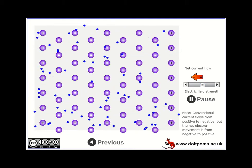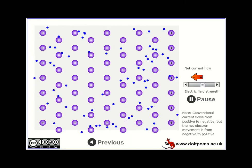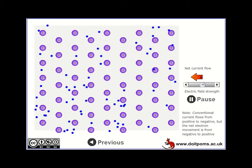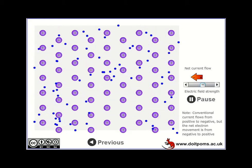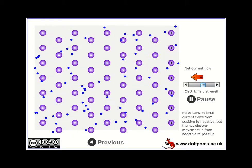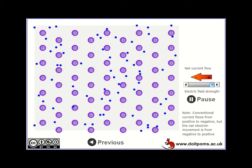And of course, electrons are negatively charged and like charges repel. So the electrons move away from the negative side towards the positive side.